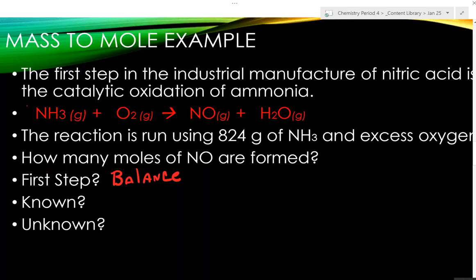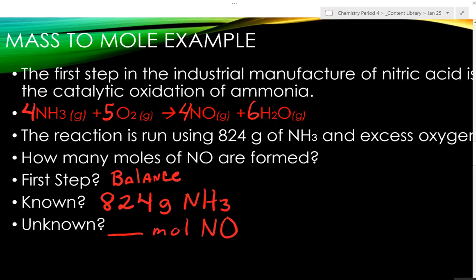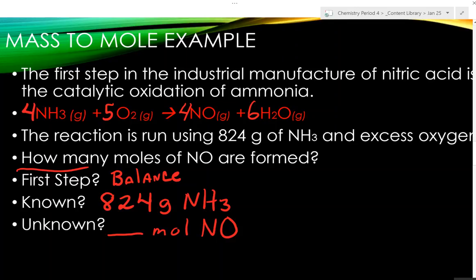Let's put in our numbers. We've got 4NH3 plus 5O2 goes to 4NO plus 6H2O. Now what do we know? What do we know from the problem? We have 824 grams of ammonia. Write it out - number, units, substance. What are we looking for? Moles of NO. That's a key thing. When it says how many, that's what we're looking for.